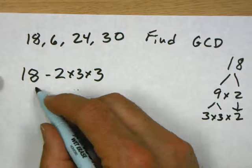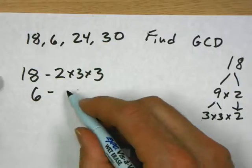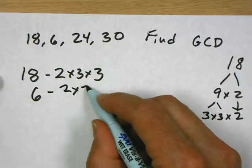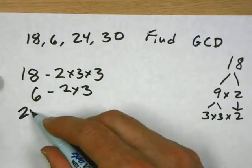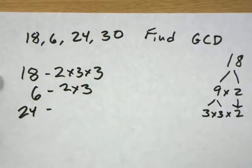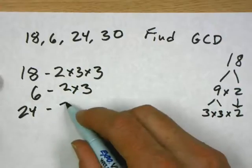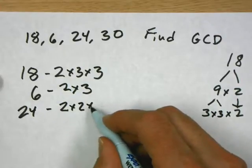And 6, that's one that's a little simpler. We have 2 times 3. 24: we have 2 times 2 times 2 times 3.